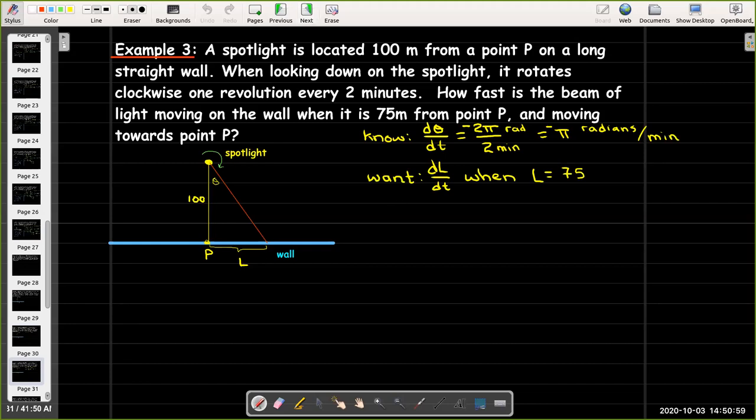And, what do we want? We want to know dL/dt. That would be the speed of the beam of light along the wall when L equals 75. Well, what formula do we have? Tangent of theta would be opposite over adjacent, so we'll use tangent of theta, giving me L over 100.